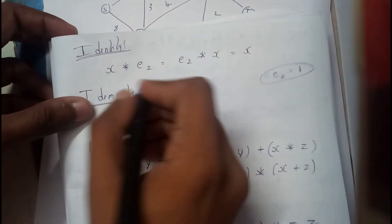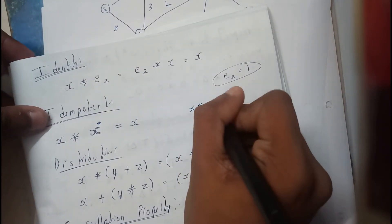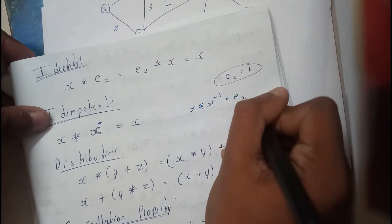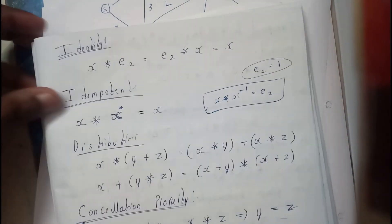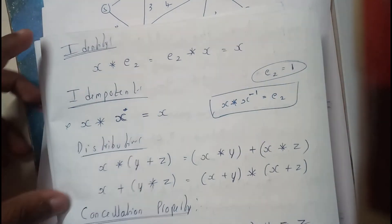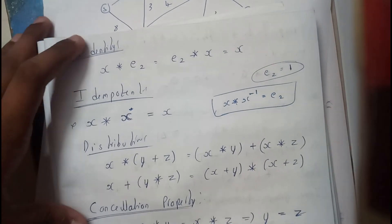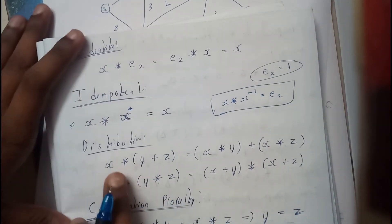Inverse will be something like this: x * x^(-1) equals e2. I think I forgot about this e2. Idempotent—I have no idea about this, so please avoid this. I think I may have misplaced it.